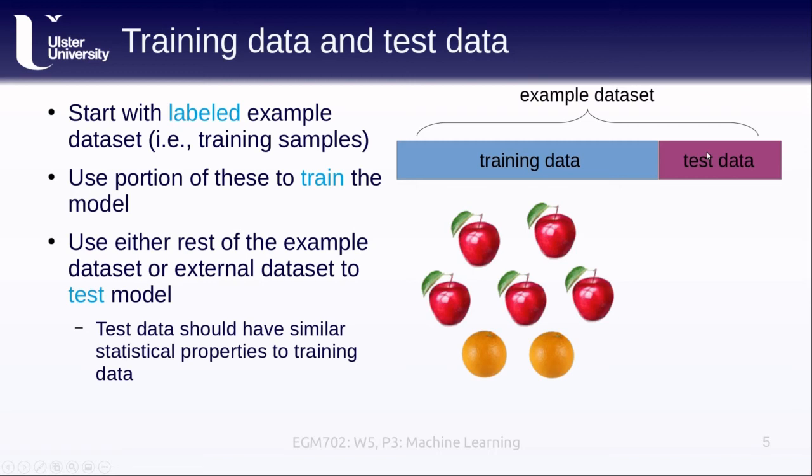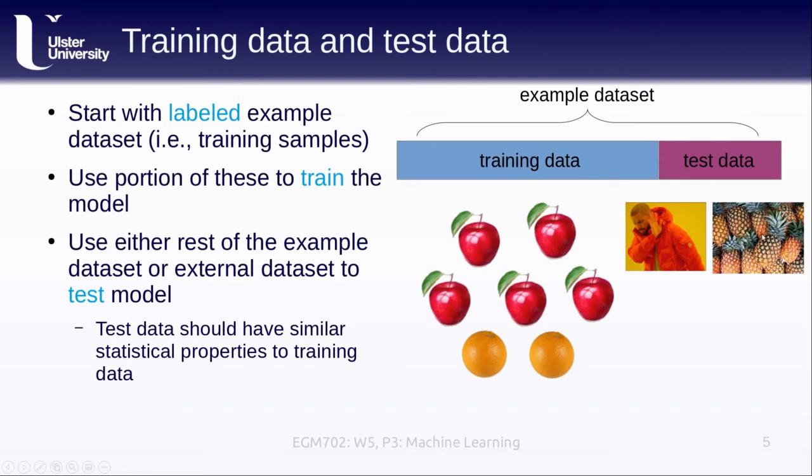We want these to have similar statistical properties to the training data, so the test data shouldn't be, for example, pineapples. This isn't actually going to tell us whether our algorithm is doing a good job identifying apples and oranges. We want our test data to look similar to what we've trained the model with.